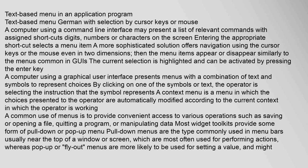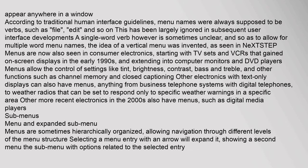Most widget toolkits provide some form of pull-down or pop-up menu. Pull-down menus are the type commonly used in menu bars, usually near the top of a window or screen, and are most often used for performing actions. Pop-up or fly-out menus are more likely to be used for setting a value and might appear anywhere in a window. According to traditional human interface guidelines, menu names were always supposed to be verbs such as File, Edit, and so on, though this has been largely ignored in subsequent user interface developments.